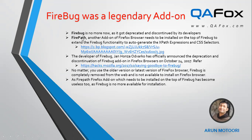These both addons together were doing wonders — they were legendary addons. They used to help Selenium automation engineers a lot. If you have both Firebug and Firepath together, you can auto-generate the XPath expressions and CSS selectors. Using Firebug and Firepath, you can auto-generate XPath expressions and CSS selectors, which are the locators we can use in our Selenium automation code.